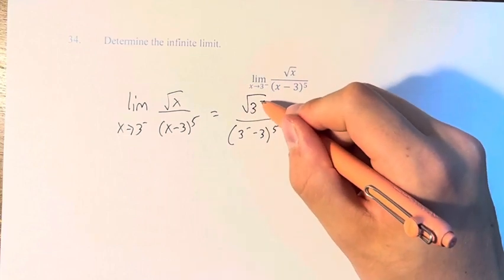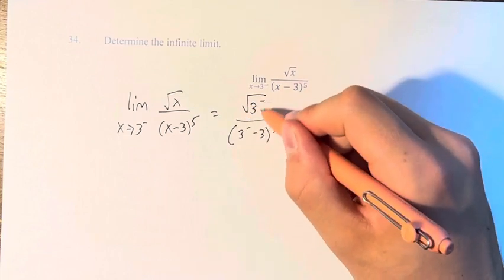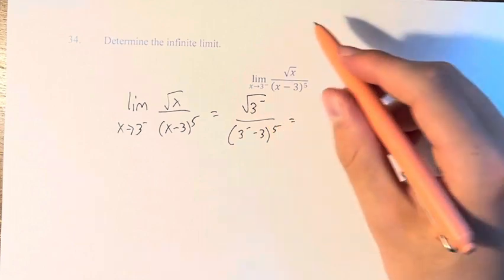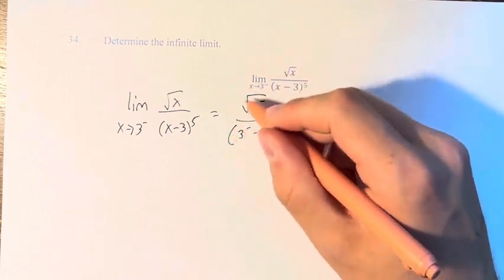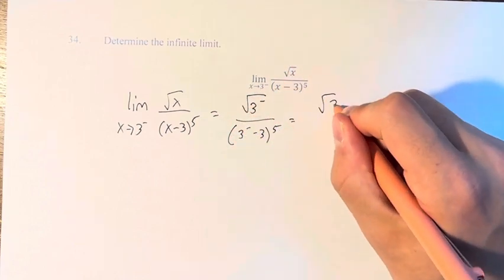Well, as we approach 3 from the left, we're just getting closer and closer to 3. Nothing really interesting happens at the square root of 3 that we care about, so this is just equal to the square root of 3.